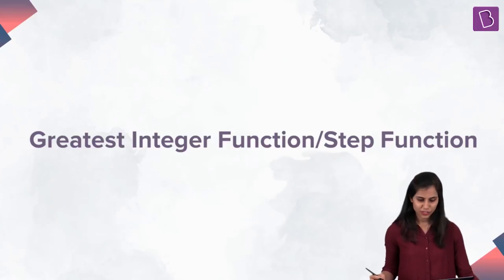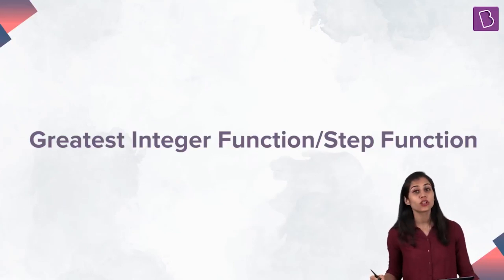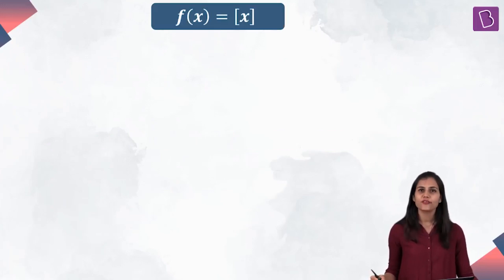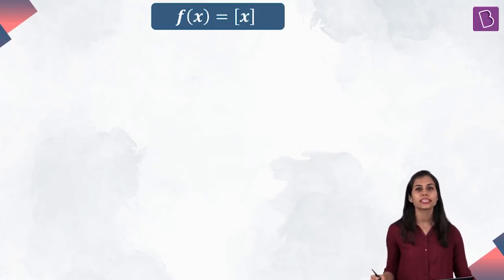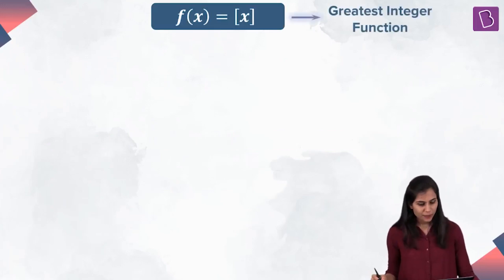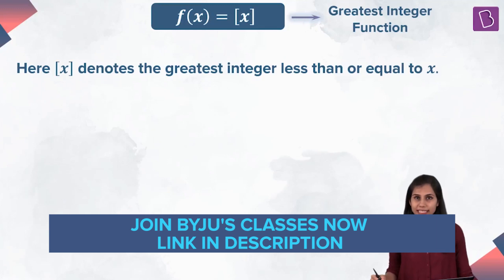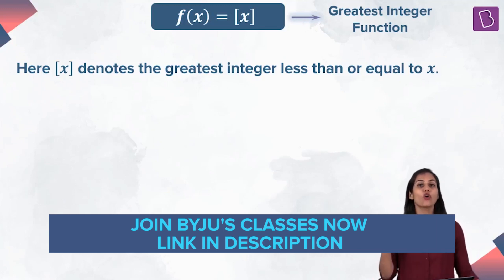Next up we have the greatest integer function, also called the step function. It is defined as f of x equals bracket x, where bracket x represents the greatest integer less than or equal to x.